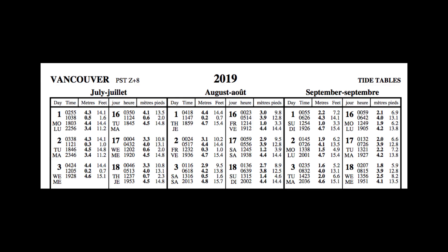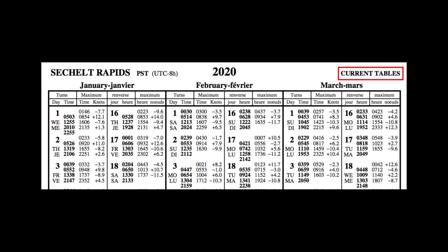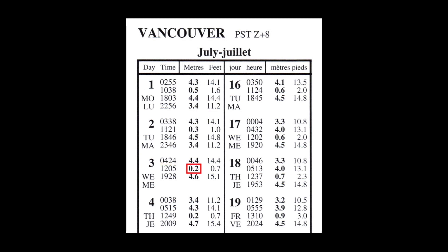Here we see a tide table for the reference port of Vancouver, using Pacific Standard Time. And since tide and current tables are usually published in the same volume, make sure that you're using tide tables for tidal predictions and current tables for current predictions. Let's take a look at the tides on Wednesday, July 3rd. At 12:05, we had a tidal height of 0.2 meters or 0.7 feet. This is a low tide since the tides before and after are high tides.